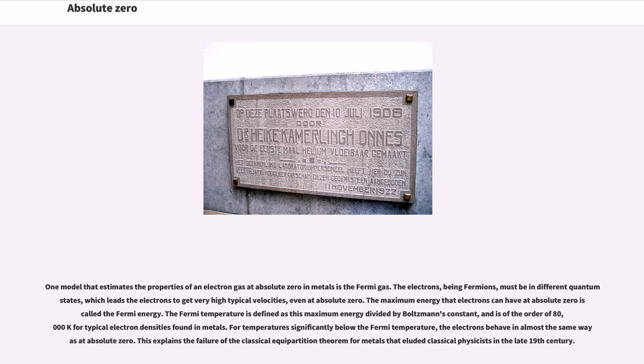One model that estimates the properties of an electron gas at absolute zero in metals is the Fermi gas. The electrons, being fermions, must be in different quantum states, which leads the electrons to get very high typical velocities, even at absolute zero. The maximum energy that electrons can have at absolute zero is called the Fermi energy. The Fermi temperature is defined as this maximum energy divided by Boltzmann's constant, and is of the order of 80,000 Kelvin for typical electron densities found in metals. For temperatures significantly below the Fermi temperature, the electrons behave in almost the same way as at absolute zero. This explains the failure of the classical equipartition theorem for metals that eluded classical physicists in the late 19th century.